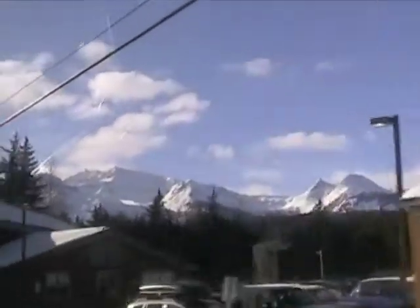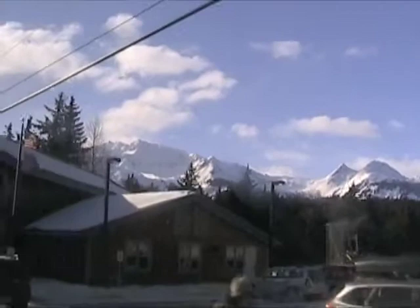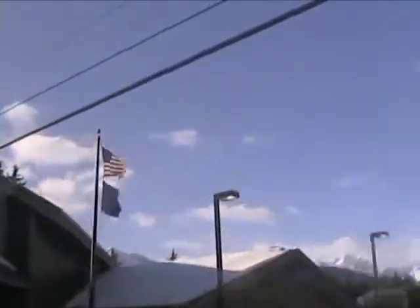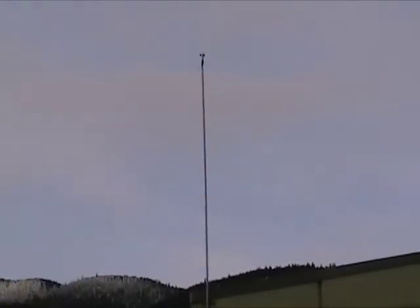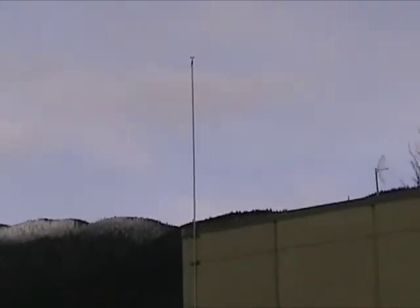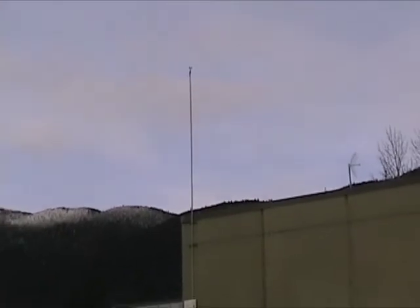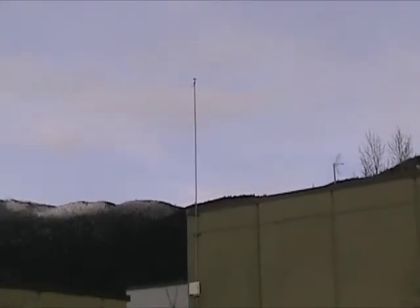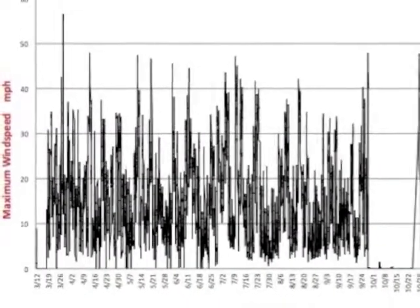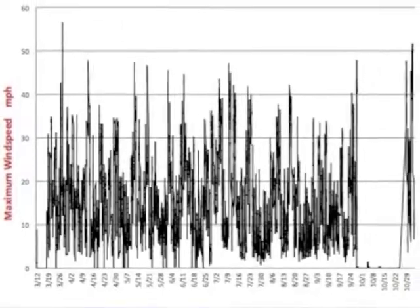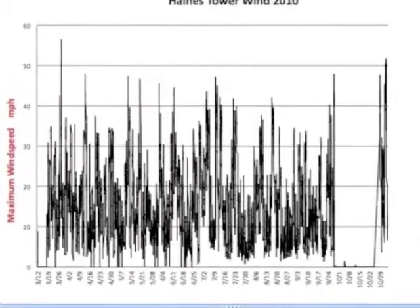Before the power systems class began the KidWind Contest, we were starting our own project to put a wind turbine on the roof of our school. With the help of APNT, an anemometer was put up so that we could see what kind of power we would get out of our 0.6kw Falcon wind turbine. Each month we were sent the data from the anemometer, visually represented in the graph you see here.